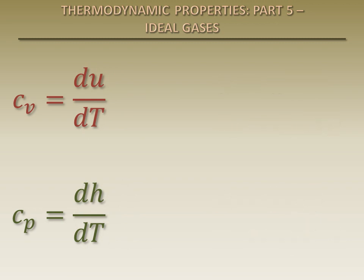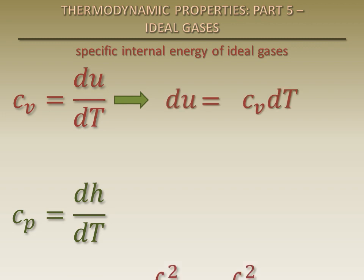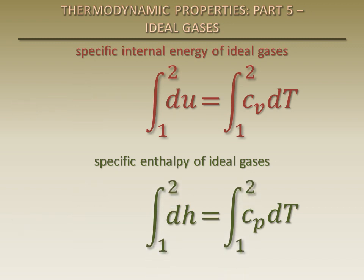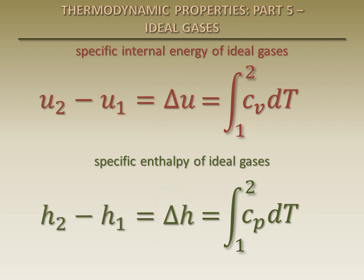These equations can now be separated and integrated from one state to another. The integrals on the left side simply become the change in the specific internal energy and the change in the specific enthalpy during the process. These equations provide relationships between the specific internal energy and the specific enthalpy, which are properties that cannot be measured, and the specific heats and temperatures, which are properties that can be measured. In order to perform the integrals on the right side, we need to have a functional relationship between the specific heats and the temperature — in other words, we need to know how the specific heats change as the temperature changes during the process.